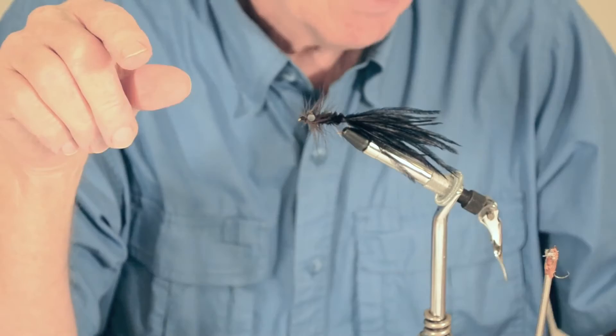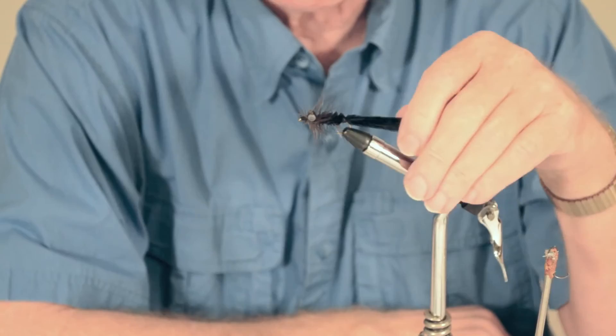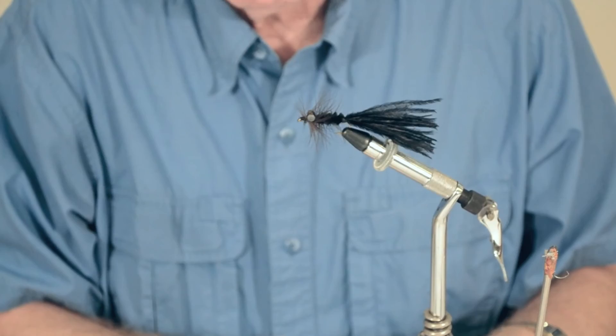This happens to be a TMC hook. The model number is a 5262. The Umpqua hooks are excellent, so are the Mustad hooks. The Mustad is 9672. Those are a little ragged on the back, so if I really want to make them real pretty, I can come up here and trim some of those off. But that is an exceptionally effective fly.